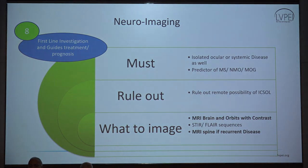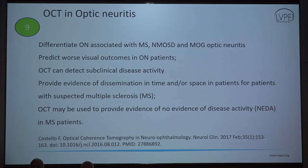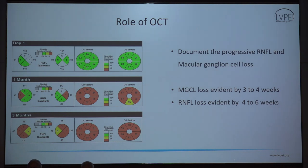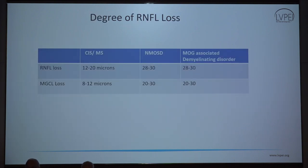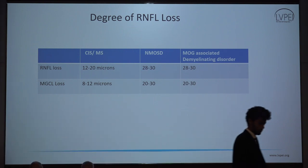MRI is a must — it will rule out other structural lesions, and we should image the MRI brain and orbits with contrast. MRI spine can be very useful, and many centers recommend doing it early, definitely if there is recurrent disease or strong suspicion for MS. OCT loss will be evident after a few weeks, and the amount of loss that occurs with NMO and MOG is much more compared to MS.